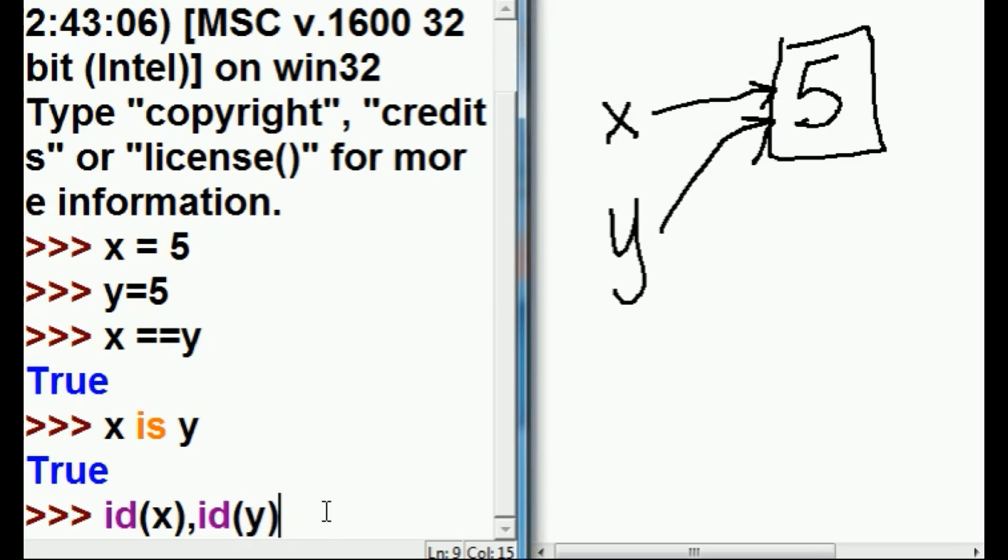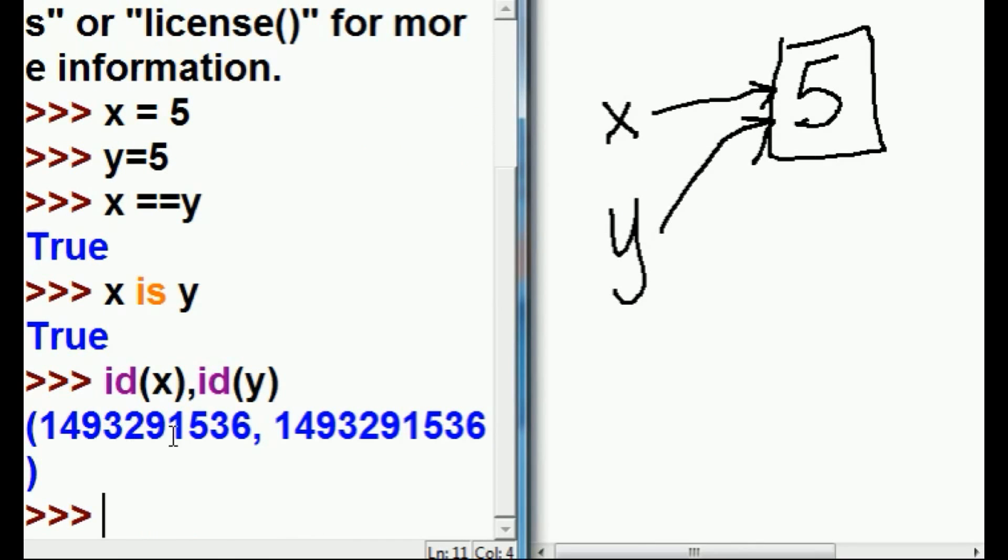Let's put that to the test. id of x and id of y, they should be the same. 1493291536, 1493291536. They are the same. They're pointing to the same spot in memory.